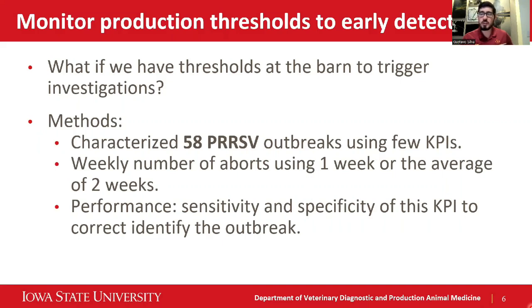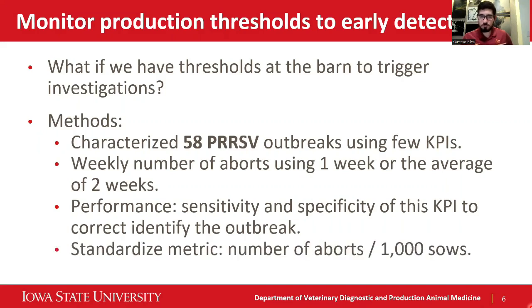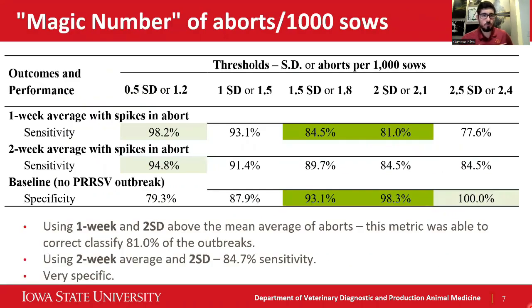We assessed the sensitivity and specificity of this KPI to correctly identify a PRRS outbreak. Instead of providing a raw number, we developed a standardized metric: the number of abortions per thousand sows. This way, you can easily apply this in your herd. A few highlights — we are calling these the 'magic numbers.' First, we can describe the baseline. The baseline is very specific when you go above 1.8 abortions per thousand sows. And we can use as low as 1.2 abortions per thousand sows.